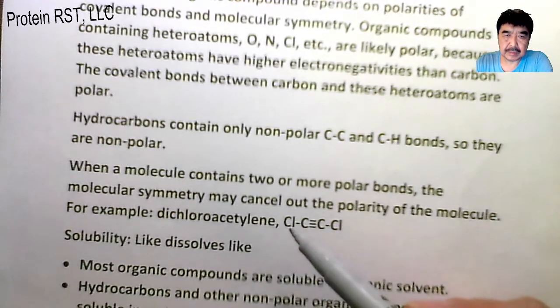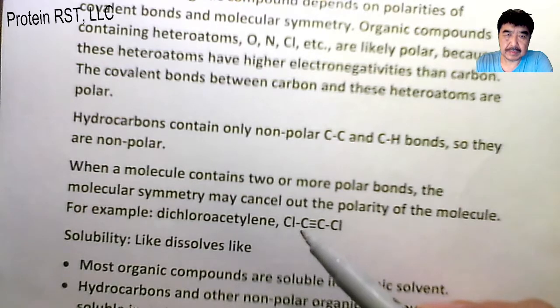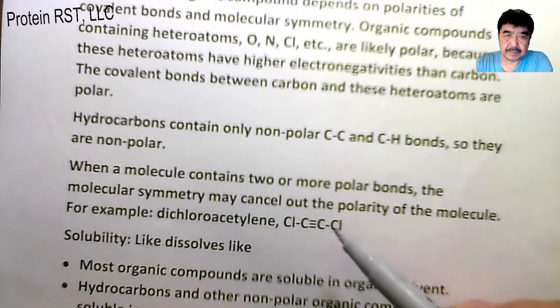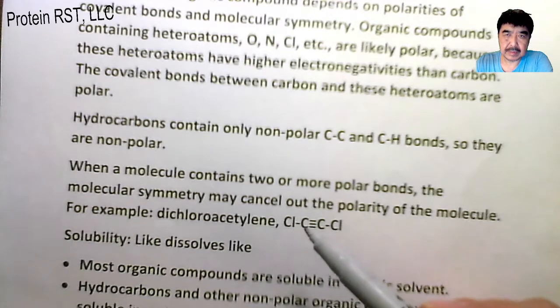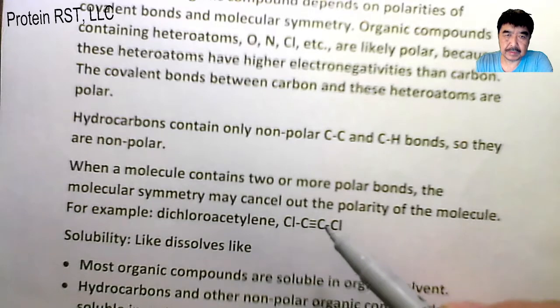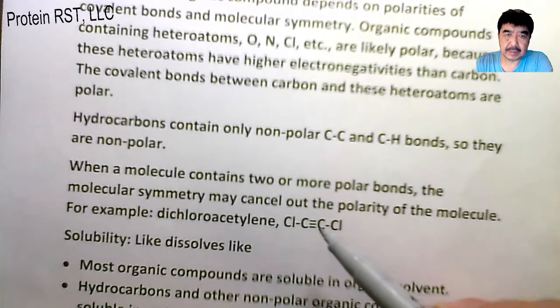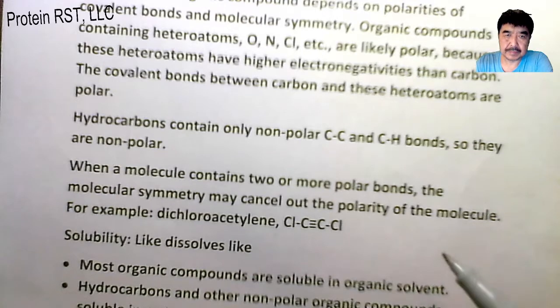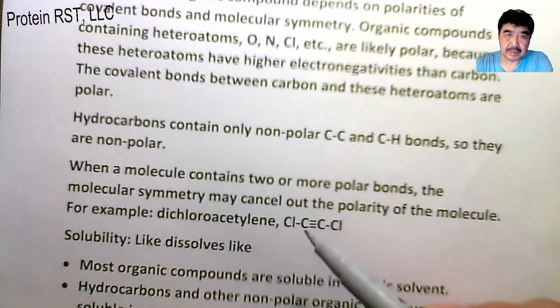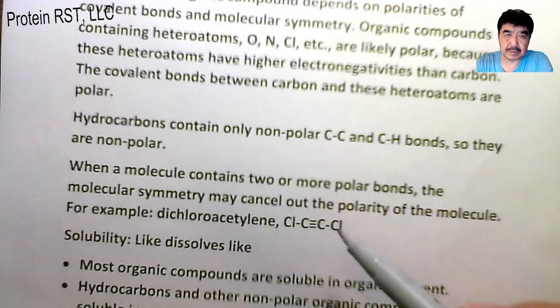You can see that the chlorine-carbon bond is polar, but the whole molecule, these two bonds cancel out. The whole molecule is non-polar. This is actually a two-fold symmetry. The polarity of the polar covalent bonds cancel out.